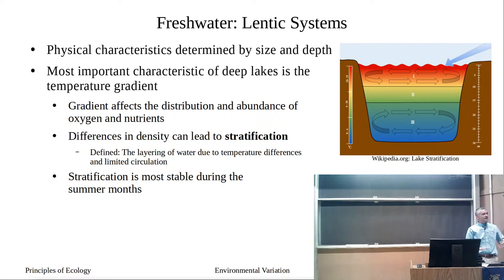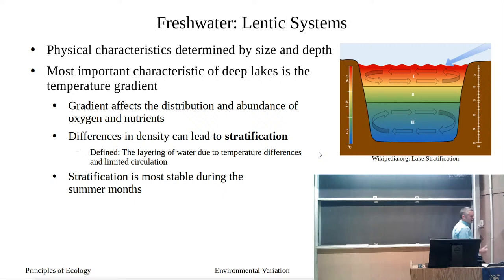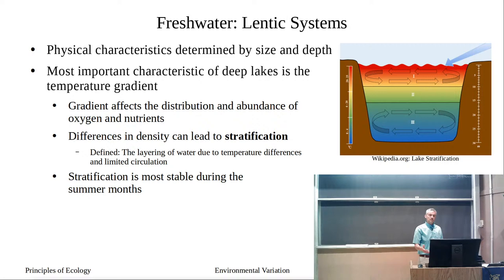Stratification is a layering of our water column, and the layering is determined by temperature. These layers form because we have limited circulation, which allows a layer of warm water at the top and cold water at the bottom. In deep lakes, this stratification is most stable over the summer months — it stays stratified until we get to the fall when temperatures start to drop.